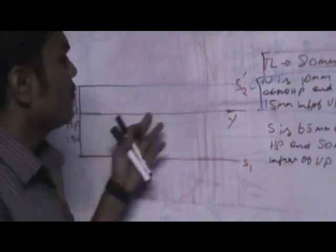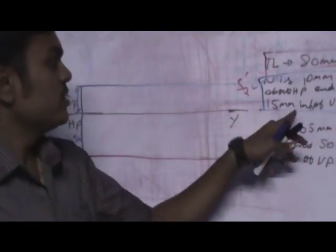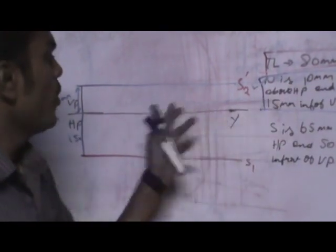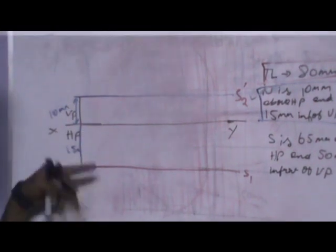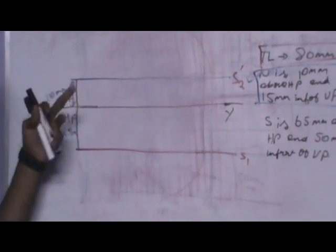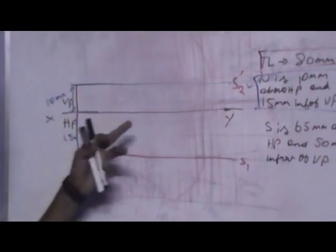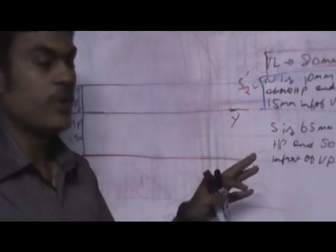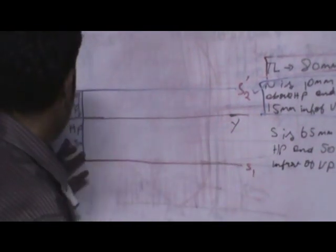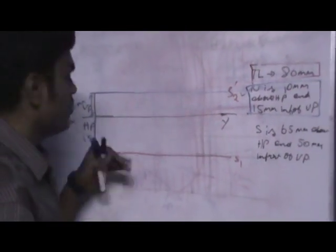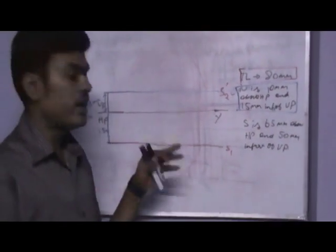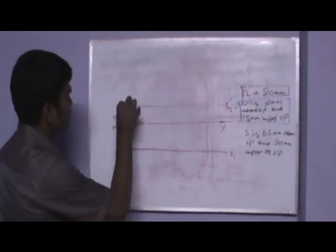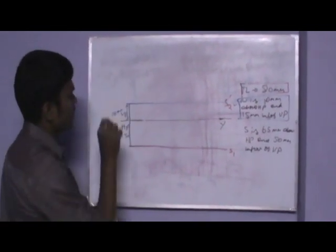One end of the line, that is N, it is 10mm above HP, so the projection falls on VP. And 15mm in front of VP — it falls on HP. So I have drawn this as 15mm and this as 10mm.